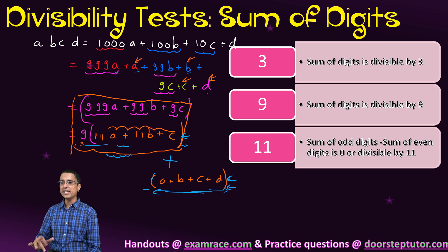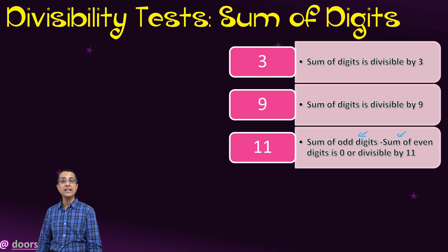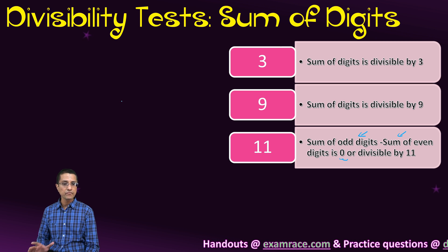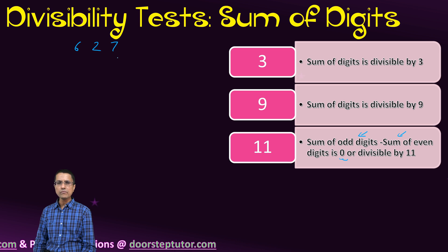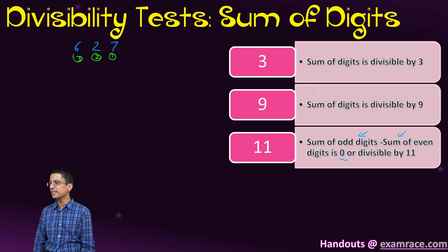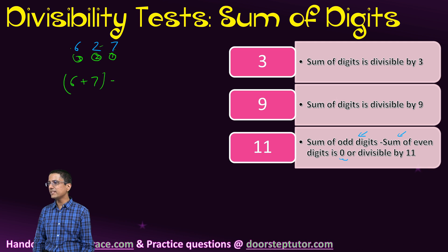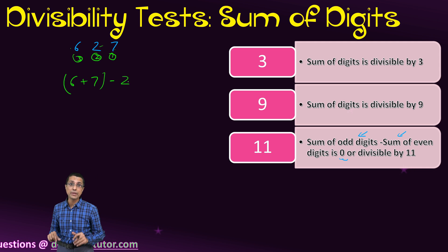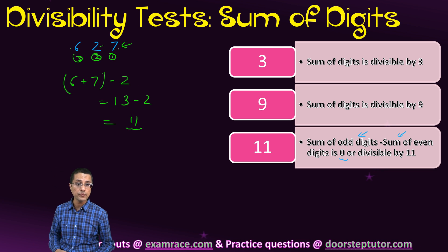Similarly, we have a divisibility test for 11. For 11, if I take the sum of the odd-positioned digits and subtract the sum of the even-positioned digits, and that result is 0 or divisible by 11, then the entire number is divisible by 11. For example, take 627. The digits are numbered first, second, third. The odd digits are 6 and 7, their sum is 13. The even digit is 2. So 13 minus 2 equals 11, which is divisible by 11, and therefore 627 is also divisible by 11.